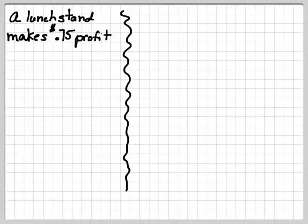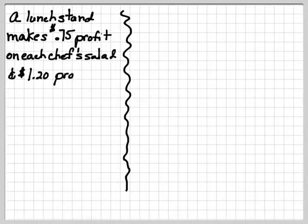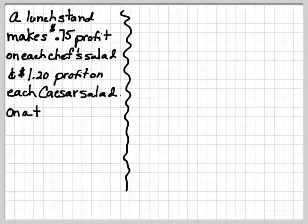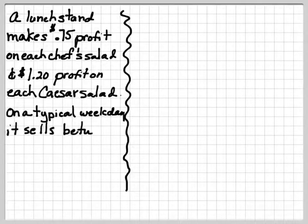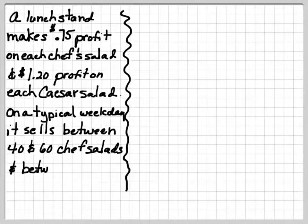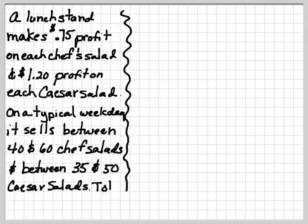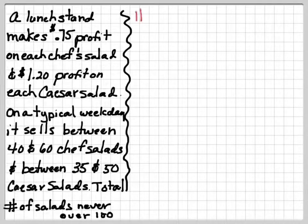Okay, let's try another one. A lunch stand makes 75 cents profit on each chef's salad and $1.20 profit on each Caesar salad. On a typical weekday, it sells between 40 and 60 chef's salads and between 35 and 50 Caesar salads. The total number of salads never exceed 100.